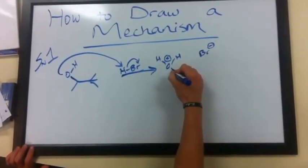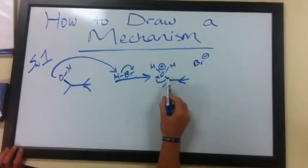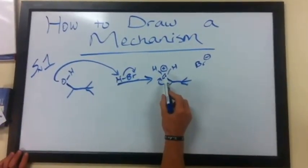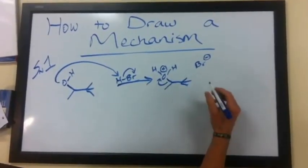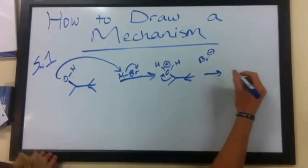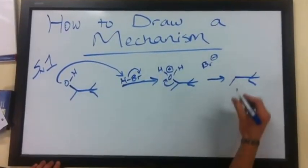The next step is the loss of a leaving group. This bond is broken and the curved arrow represents the electrons being added to the oxygen in the water molecule, taking away this charge and forming a carbocation.